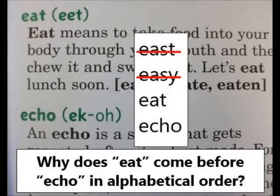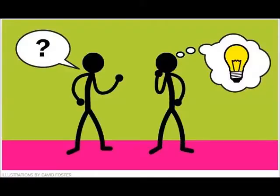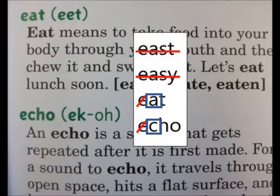Now it's your turn to try one. Why does eat come before echo in alphabetical order? You may want to pause the video to answer. The first letter in each word is E, so we cross those out and move to the second letter. Those letters are different — A comes before C in the alphabet, so eat comes before echo in ABC order.